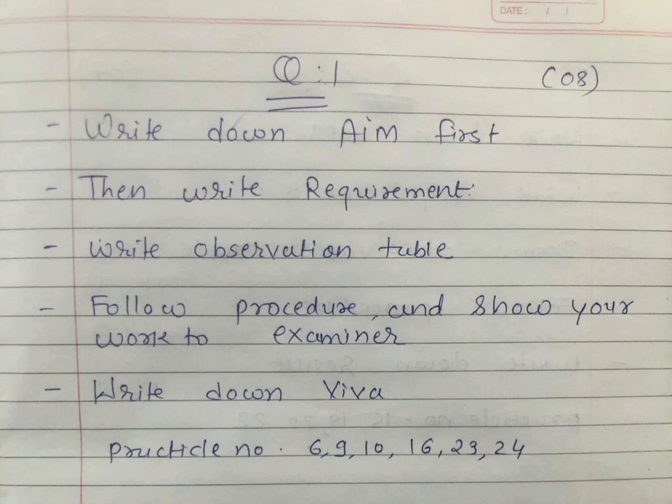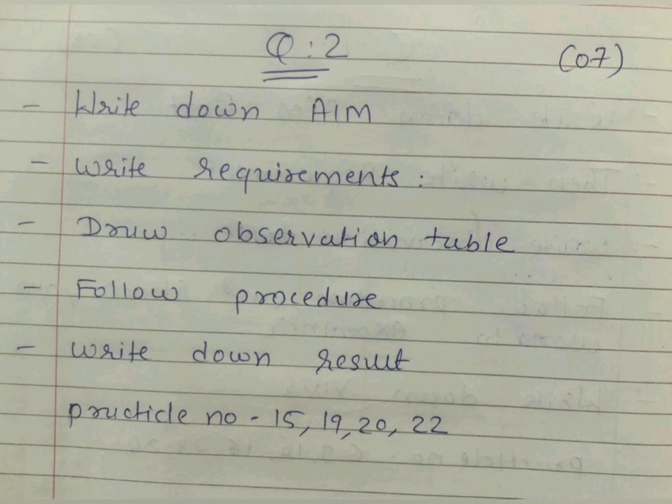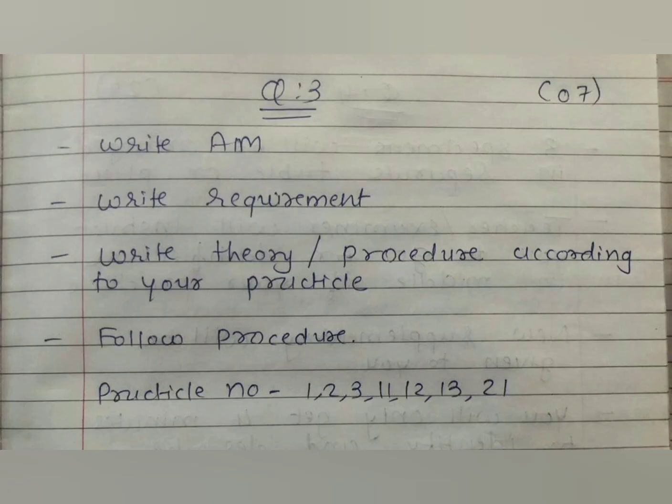As I discussed in my previous video, practical numbers 6, 9, 10, 16, 23, and 24 will be asked in question number one. Prepare very well for question number one. For question number two, you have to write aim, requirement, and observation table. Practical numbers 15, 19, 20, and 22 will be asked in question number two. Prepare very well for this seven-mark question.